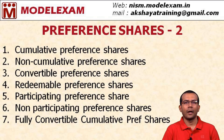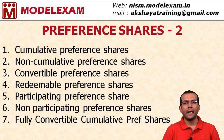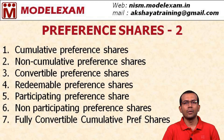The third type is convertible preference shares — convertible means the preference shares can be converted into normal equity shares at the end of a specified period. The fourth type is redeemable preference shares — redeemable means the preference shares can be redeemed after a specified duration, for example five or ten years. The Companies Act states that no preference shares can be issued as irredeemable, so in that sense all preference shares are redeemable.